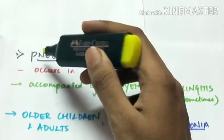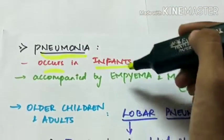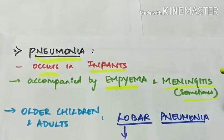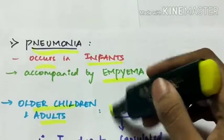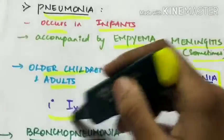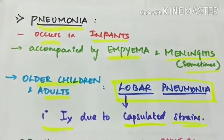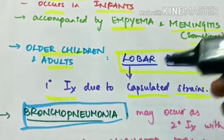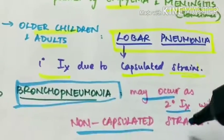Third is Pneumonia. Pneumonia occurs in infants. It is accompanied by empyema and sometimes also with meningitis. In older children and adults, lobar pneumonia occurs which is primary infection due to capsulated strains.